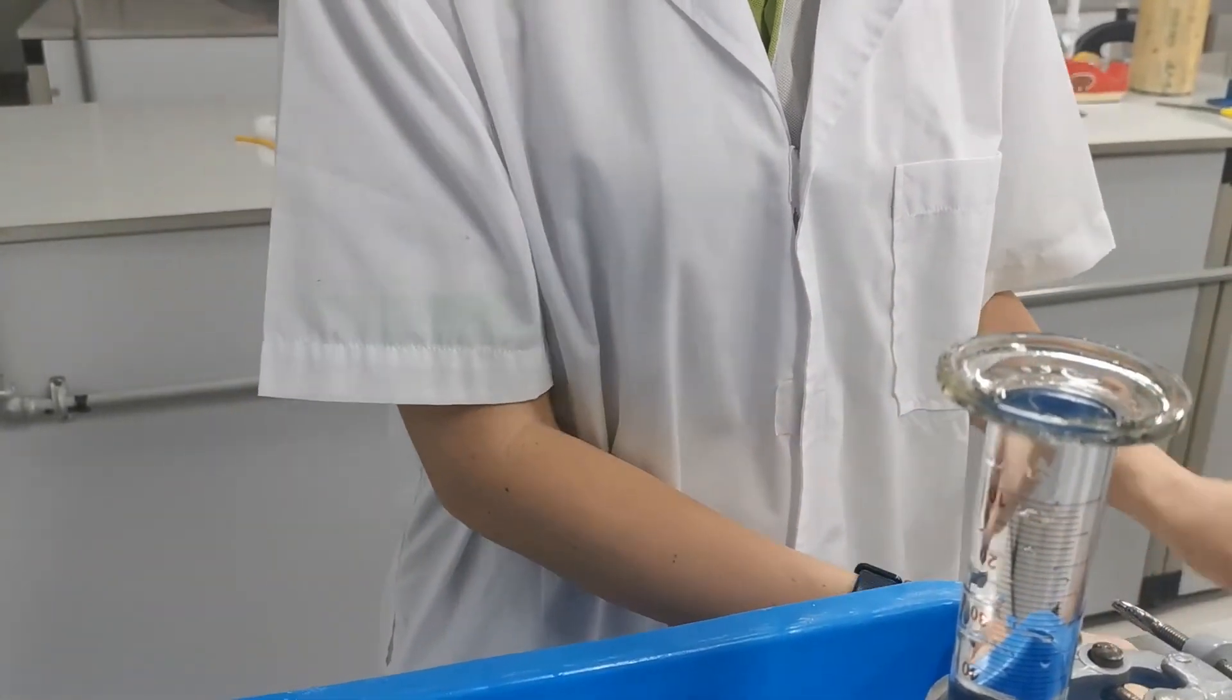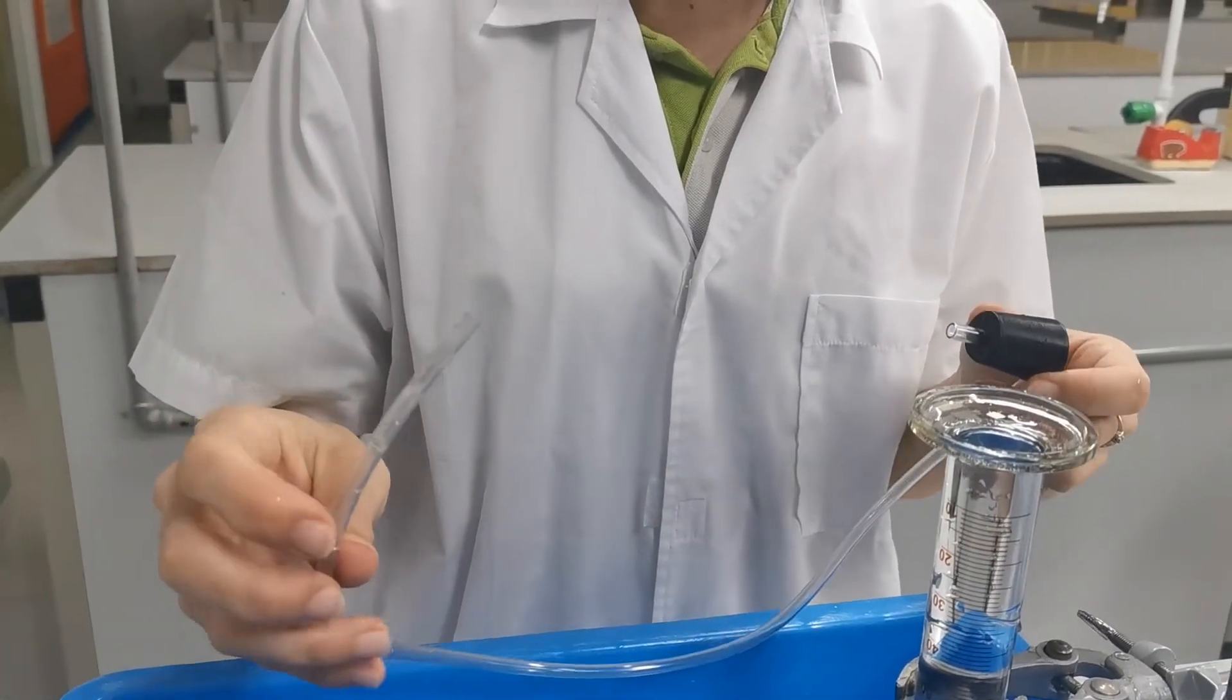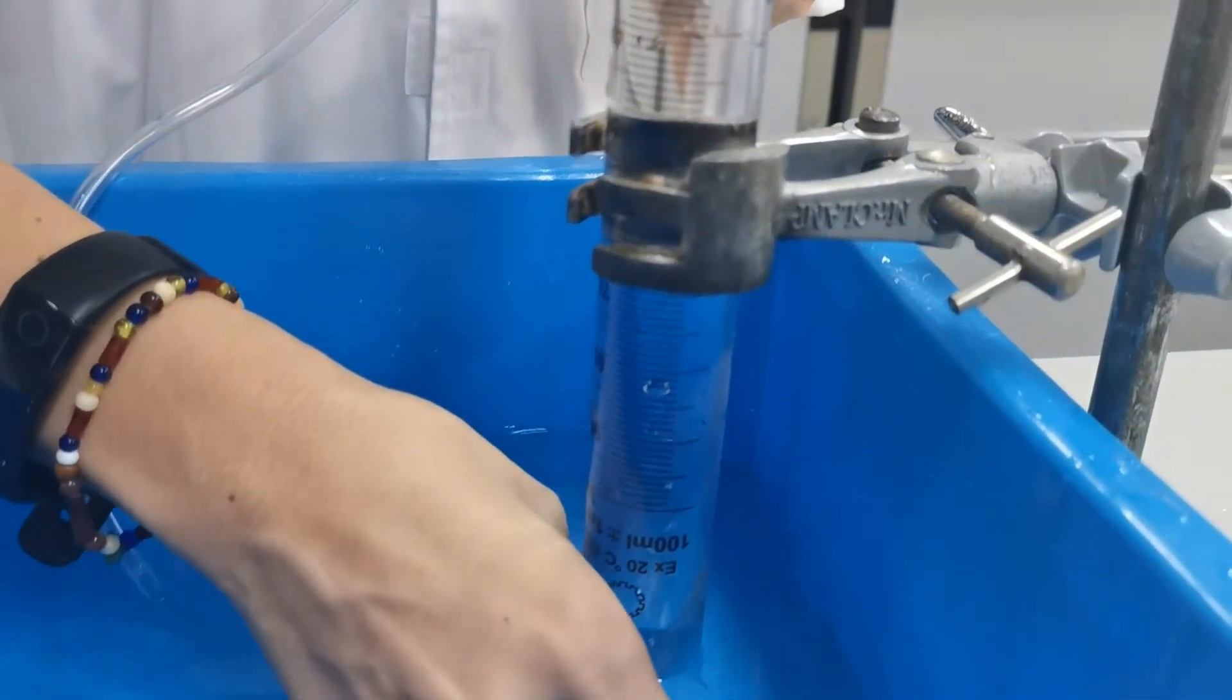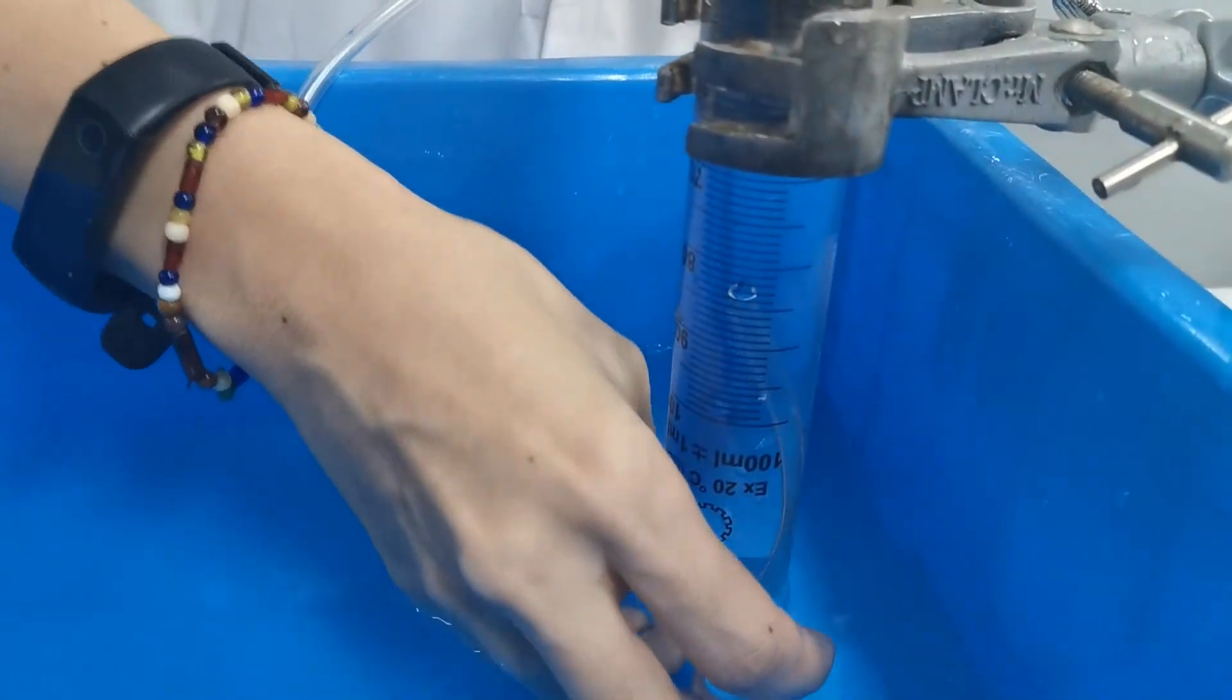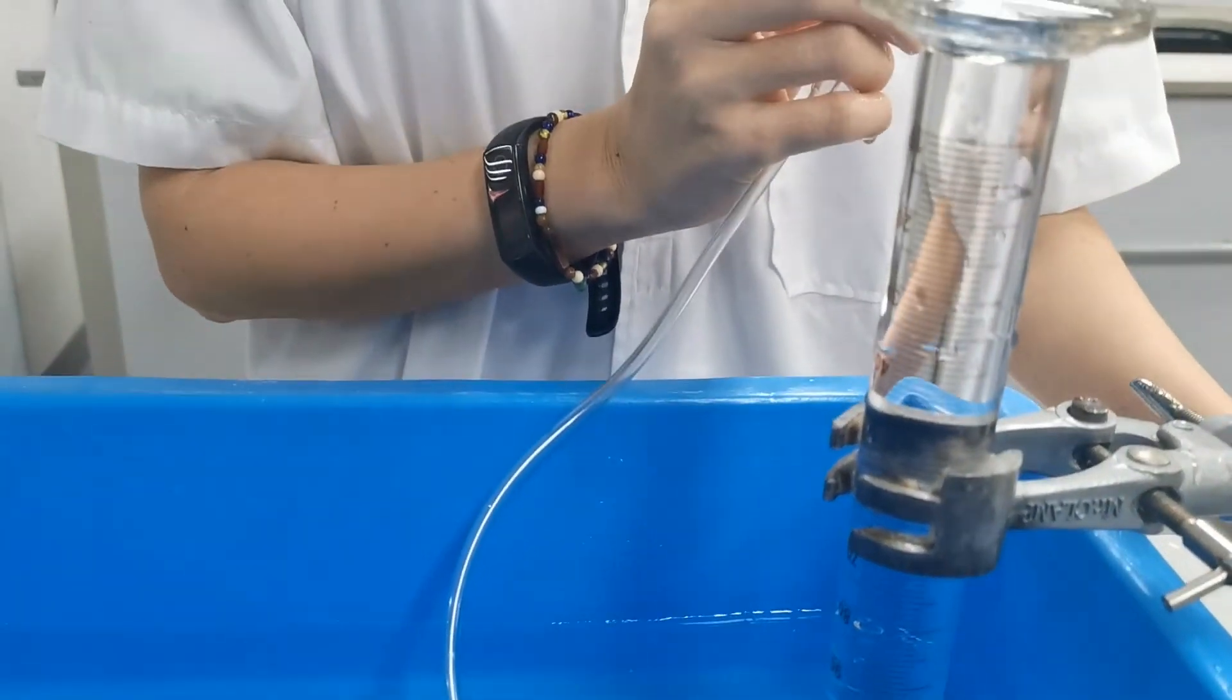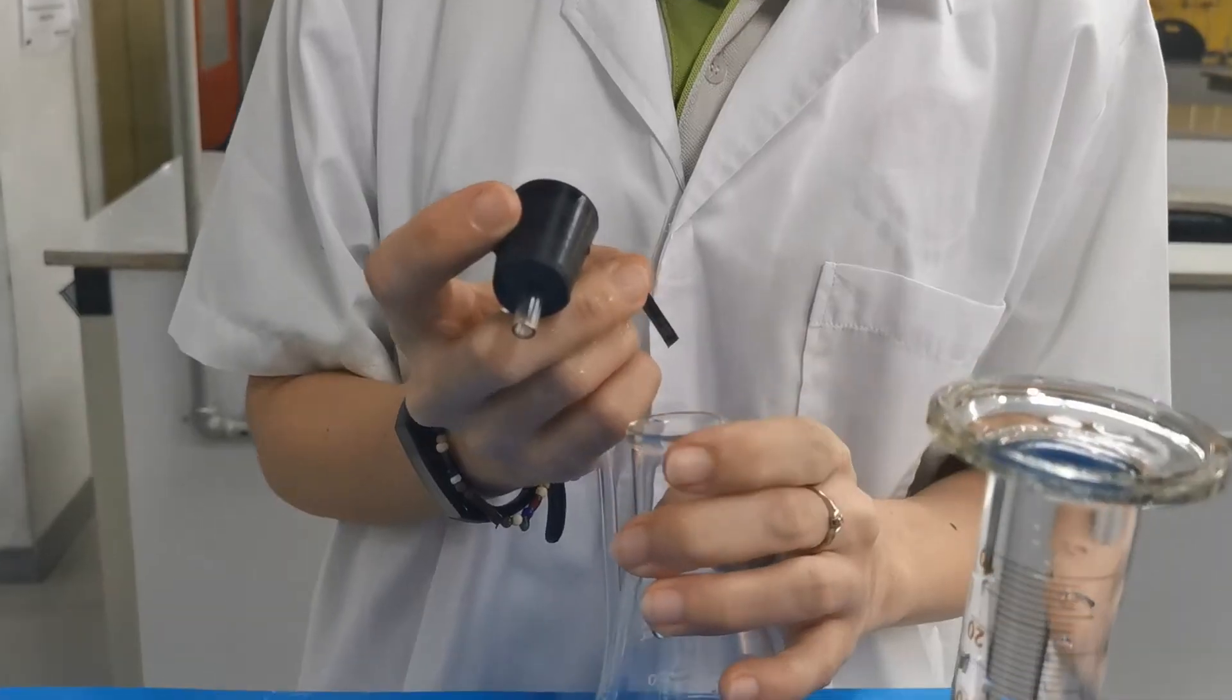I need to put this delivery tube into the measuring cylinder that we have previously filled with water, then drop my magnesium ribbon into the conical flask and secure it straight away using the stopper.